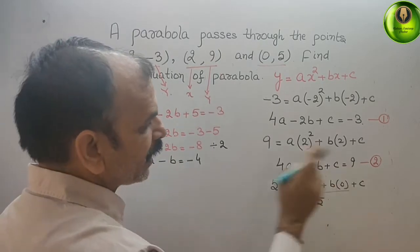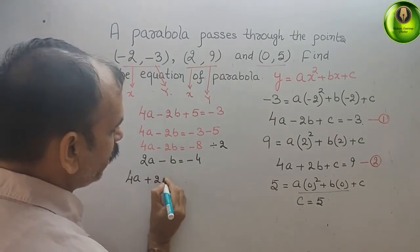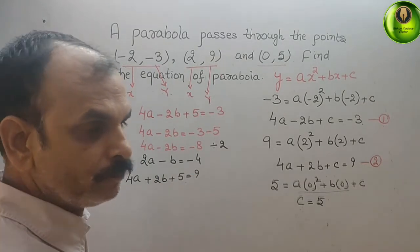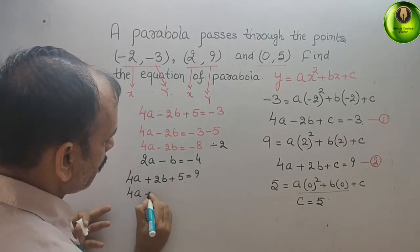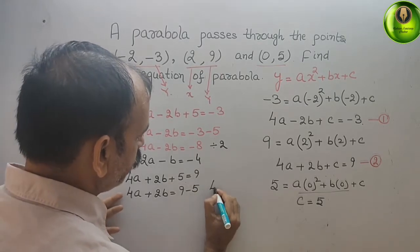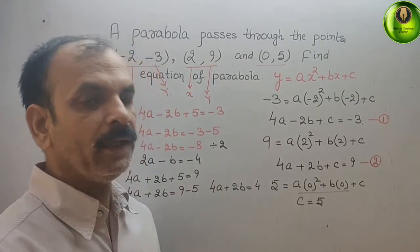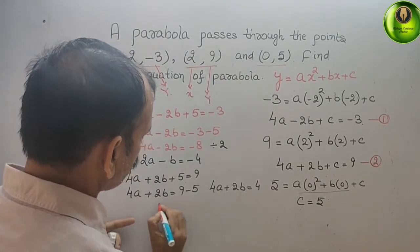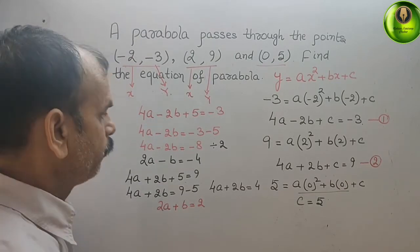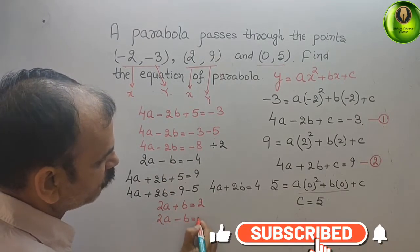Now substitute c = 5 into the second equation: 4a + 2b + 5 = 9. Bringing 5 to the right side: 4a + 2b = 4. Dividing by 2, we get 2a + b = 3. Bringing down the first reduced equation: 2a - b = -4.